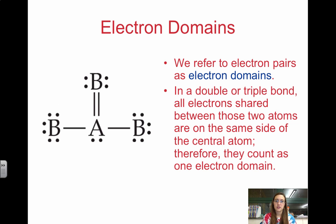In a double or triple bond, all electrons shared are on the same side, so they just count as one. So lone pairs, single bonds, and multiple bonds all count as one electron domain. It's a region in which electrons can be found.